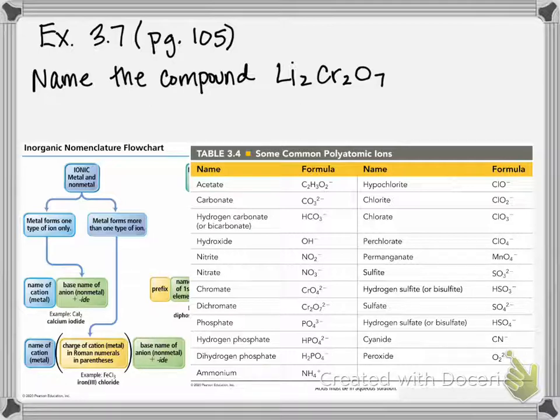So table 3.4 lists some common polyatomic ions. For instance, acetate is an ion that always contains two carbons, three hydrogens, two oxygens, all with an overall charge of negative one. So for these polyatomic ions, you should know them, be able to recognize them, and know the names so that you can name and write compound formulas that contain them.